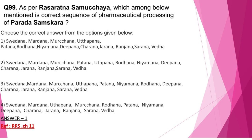Question number 99: As per Rasaratna Samuchaya, which is the correct sequence of pharmaceutical processing of Parada Samskara? The correct answer is option 1. The correct sequence of the Ashtadasha Parada Samskara mentioned in Rasaratna Samuchaya is: Svetana, Mardana, Murchana, Utthapana, Trividapatana, Rodhana, Niyamana, Sandipana, Gagana Bhakshana, Sancharana, Garbhadruthi, Bahidruthi, Jarana, Grasa, Sarana, Sankramana, Vedha and Yoga.